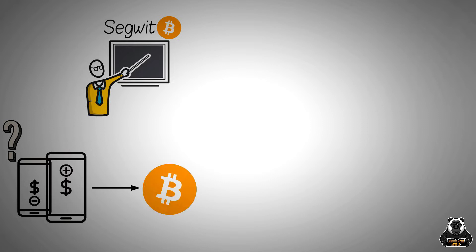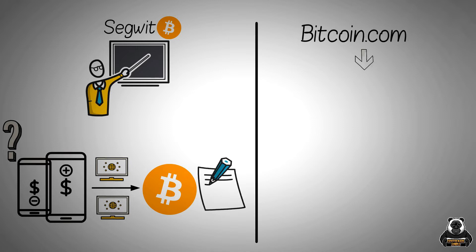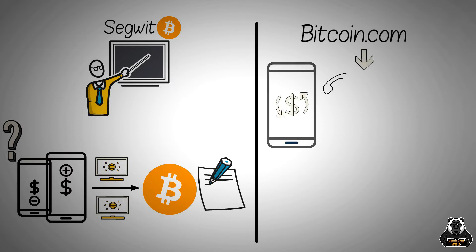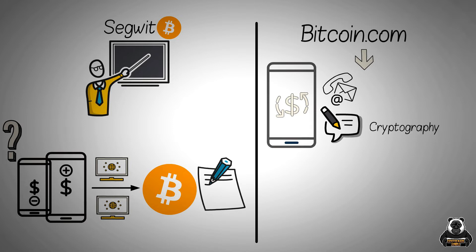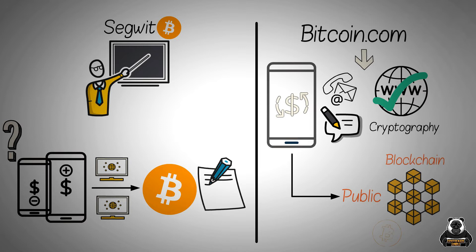A Bitcoin transaction is a transfer of Bitcoin from one address to another. Each transaction has a digital signature and transaction data. Bitcoin transactions are messages, like email, which are digitally signed using cryptography and sent to the entire Bitcoin network for verification. Transaction information is public and can be found on the digital ledger known as the blockchain. The history of each and every Bitcoin transaction leads back to the point where the bitcoins were first produced or mined.